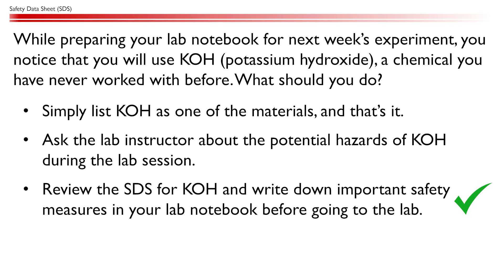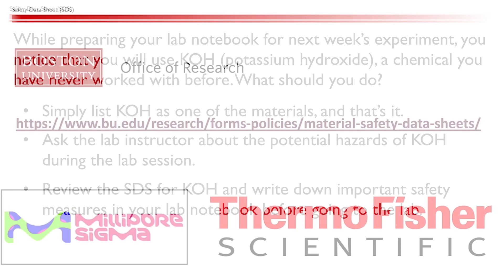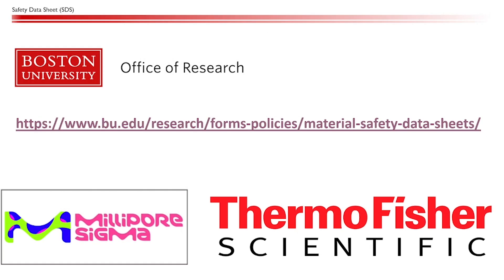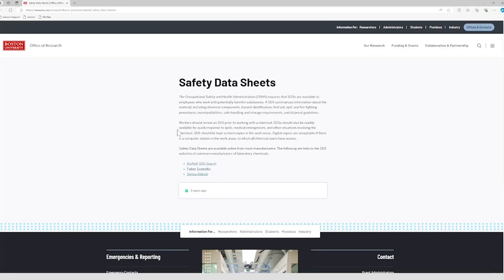If you have any questions or concerns, don't hesitate to double check with your instructor during the lab. Now, let's talk about how to look for the SDS for a given chemical compound. Most chemical manufacturers have an online database that compiles SDSs for various chemicals. Some widely used databases include those of Fisher Scientific and Sigma Aldrich. You can access these resources through this website.